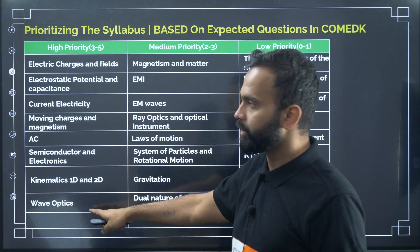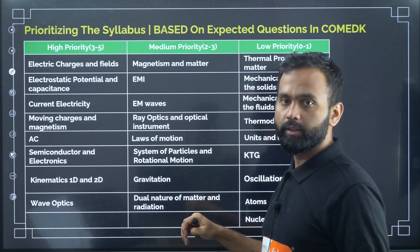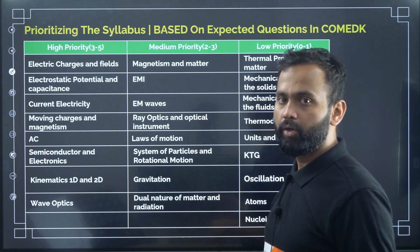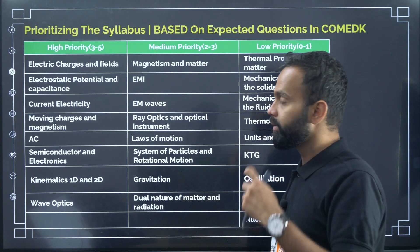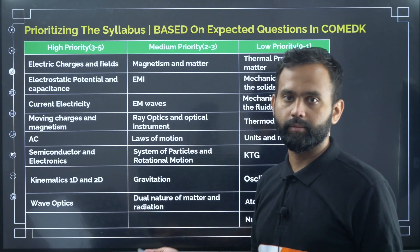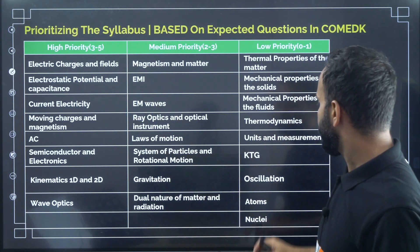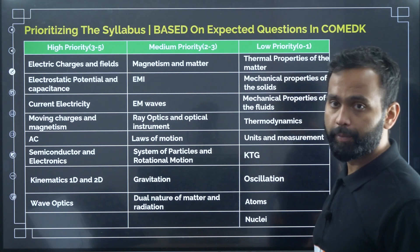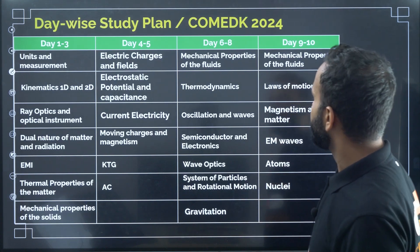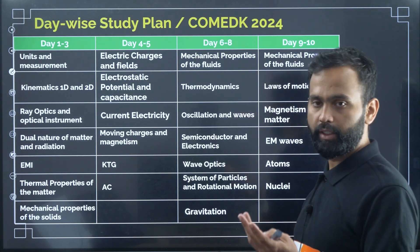These are the chapters of high priority, medium priority, and lower priority. You have to focus more on high priority chapters and give moderate focus to medium priority chapters. Now let's look at the day-wise study plan for COMET K 2024. The first three days are Day 1, 2, and 3.